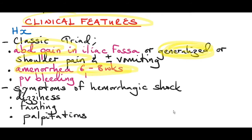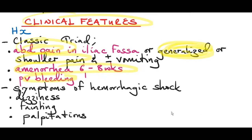Why 6 to 8 weeks? The embryo is growing in the fallopian tube, which is a small space that cannot accommodate the developing embryo. By 8 weeks, there is not enough space and the fallopian tube will rupture, which is when the patient presents. Vaginal bleeding or spotting may occur. Importantly, in ectopic pregnancy, abdominal pain comes first, followed by vaginal bleeding. In miscarriages, vaginal bleeding usually comes first, then abdominal pain — though this is not always the case.